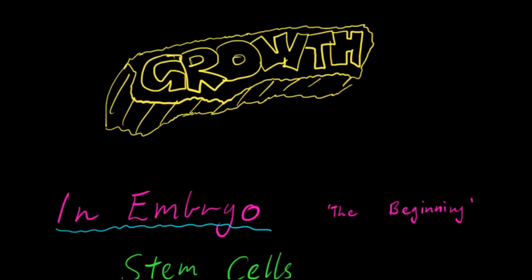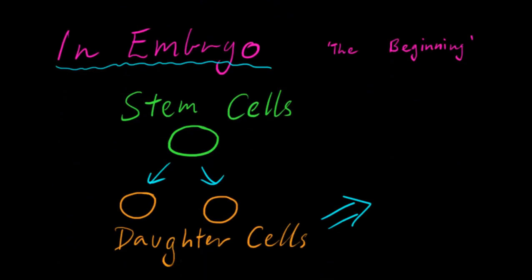Let's start off by looking at growth. In embryo, in the beginning, we have these stem cells. They are undifferentiated and they are precursor cells to daughter cells.